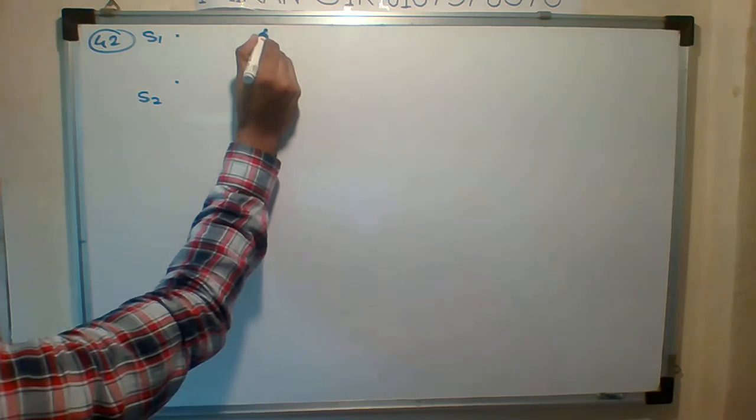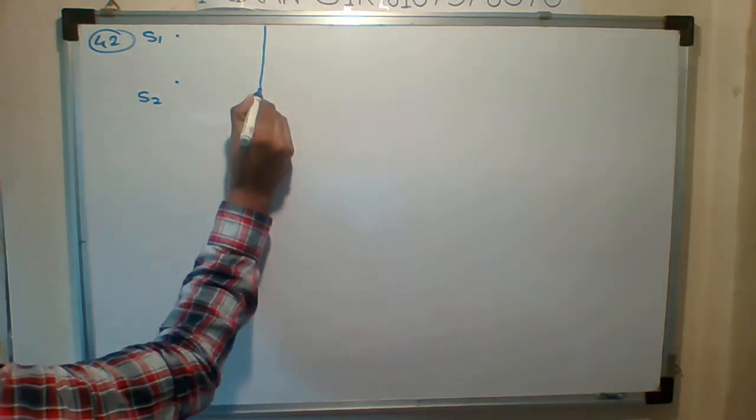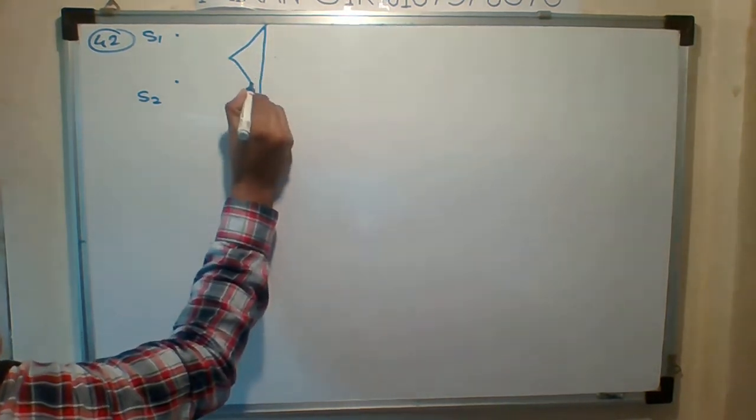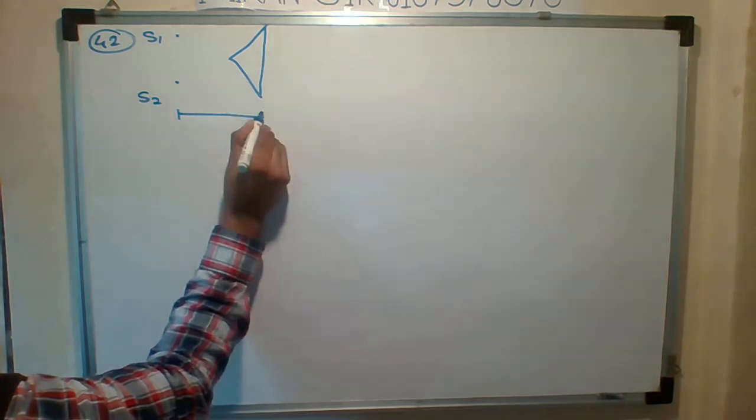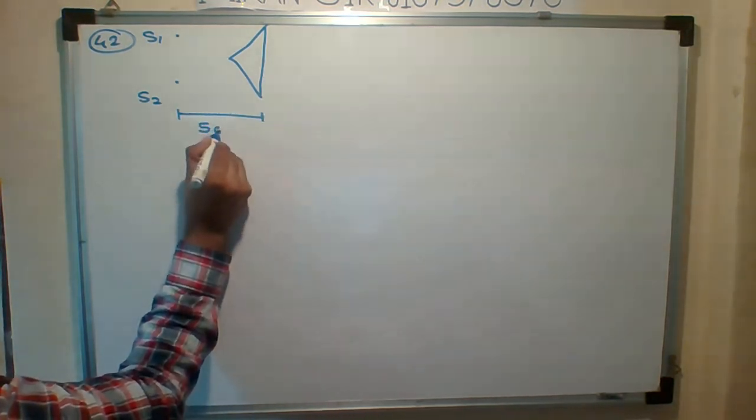A biprism is placed at a distance of 5 cm from the slits. So students, what do I have to do here? S1 and S2 are two slits. I keep biprism, and biprism distance is 5 cm from the slits.